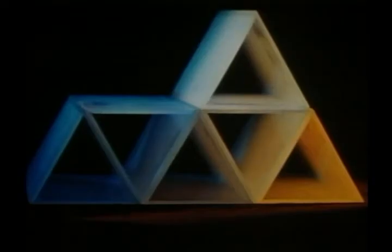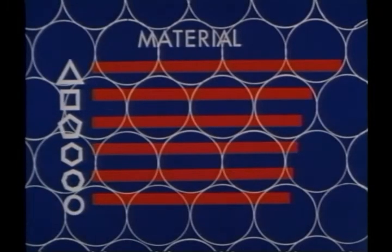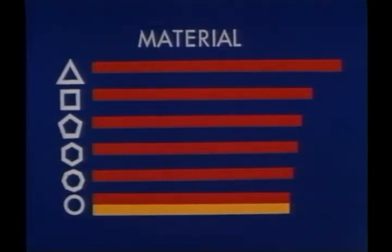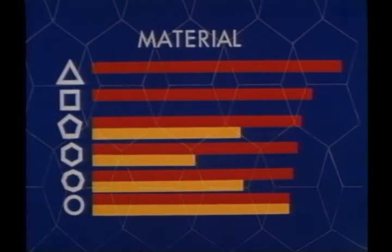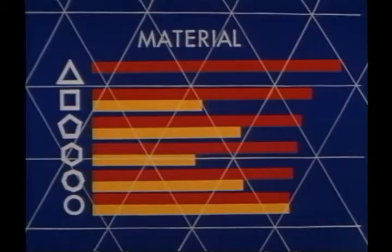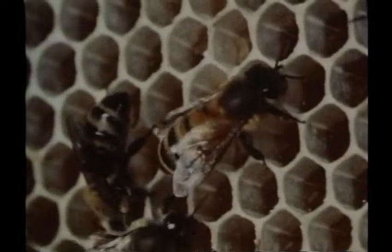Thus, octagons, in which four of eight sides can be shared, save 25% on material. Triangles, by sharing all their sides, and squares, save 50% on material. Therefore, when we consider the savings possible through the sharing of sides, the material needed to construct cylinders does not change. But the other figures require less material, for they share sides. Of all the figures, the hexagon uses the least material. This is the shape the bees use.